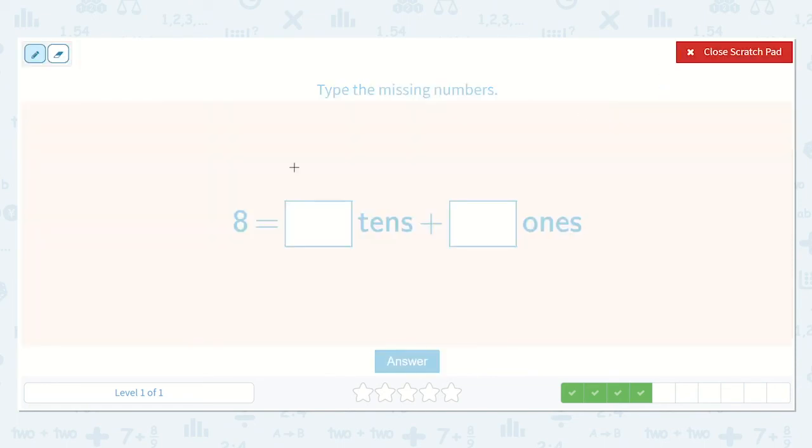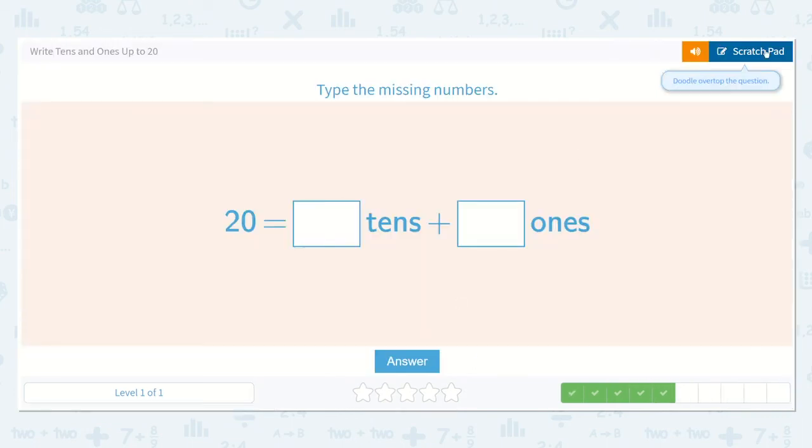Let's look at this one. 8. If we have our tens place and our ones place, we know that the 8 would go in our ones place. Do we have anything in our tens place? Nope. So we know it's 0 tens. And the 8 is in our ones place. So there were 8 ones.